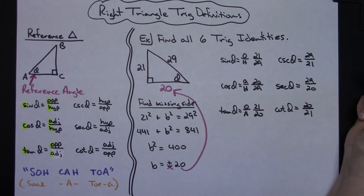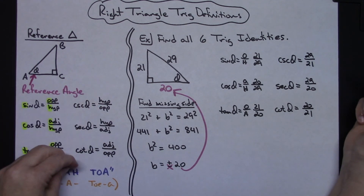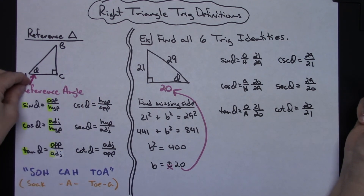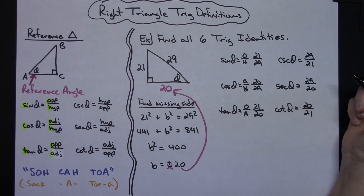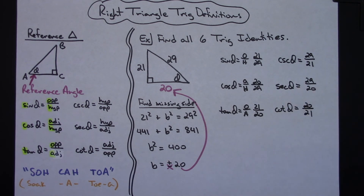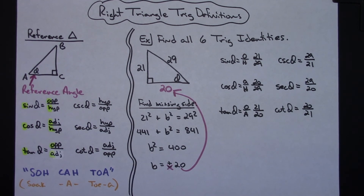So that's a beginning introductory look at what the formulas are, the reference angle, and how you would go about finding your six trig identities when given a right triangle — very early on stuff that you would learn in right triangle trig. Thanks for watching. If the videos are helping, be sure to subscribe to the channel and share with your friends.